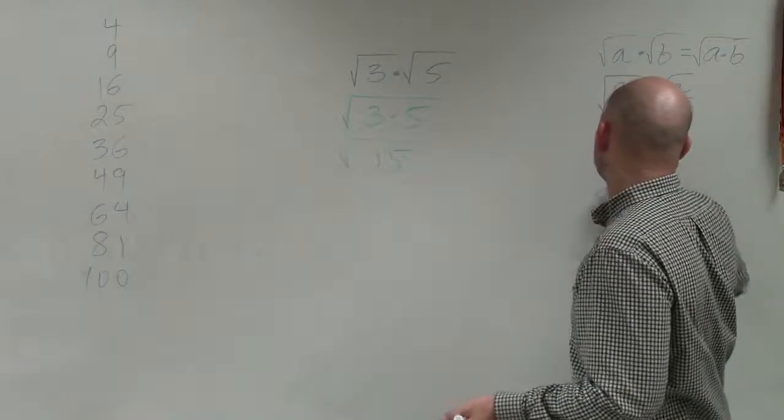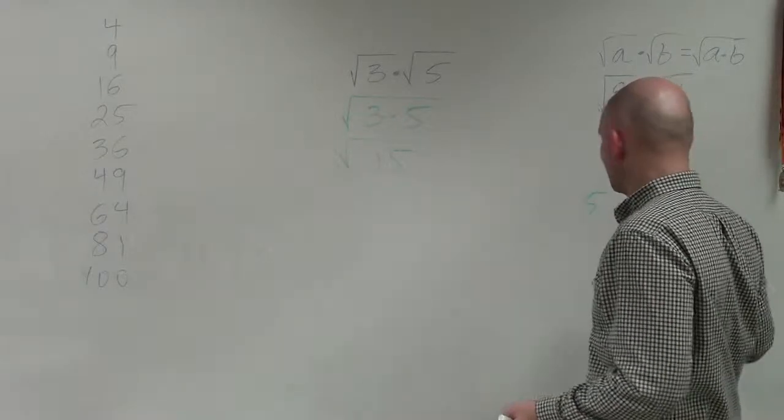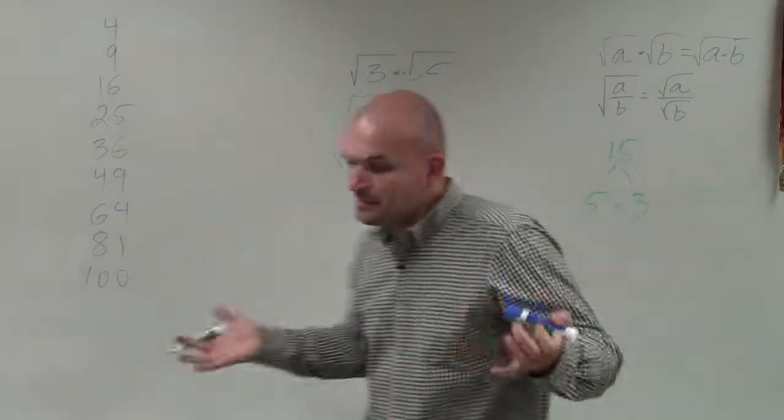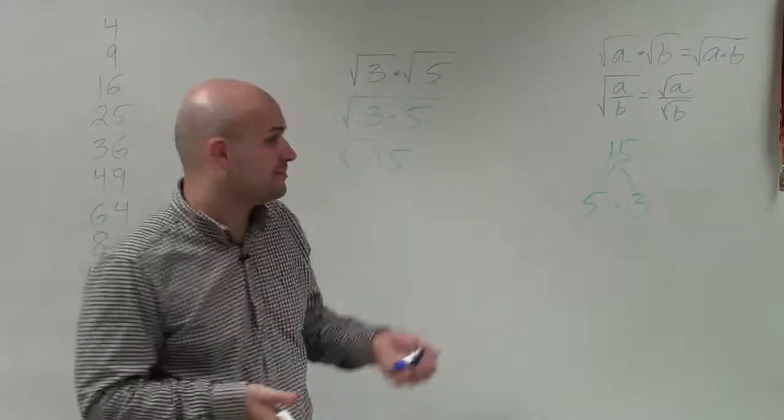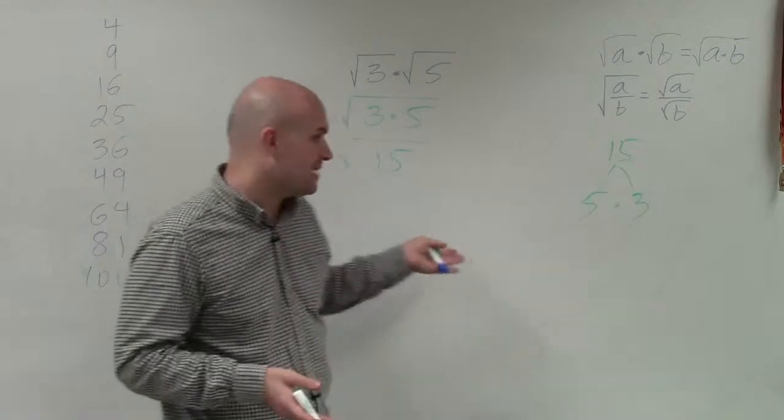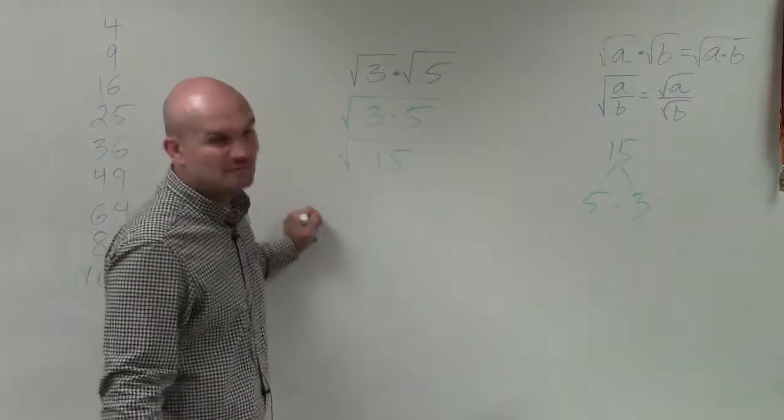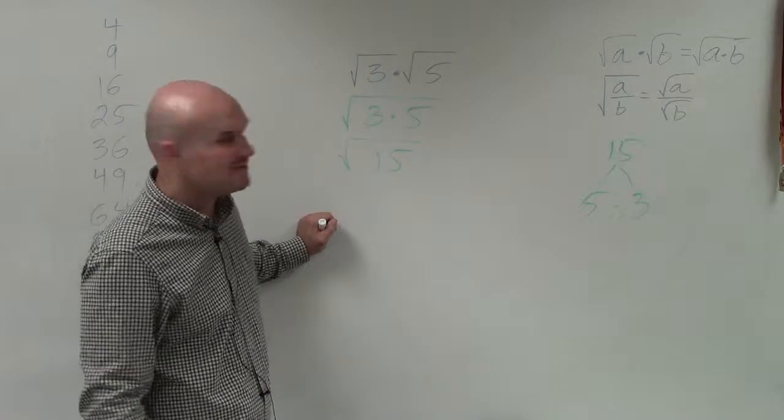Even if we looked at writing the prime factorization, remember when we write the prime factorization, we want to write it as a product of prime numbers. And if there's any pair of prime numbers, we can factor that out of the radical. But in this case, prime factorizing 15 would be 5 times 3. I don't have a pair of the same numbers.